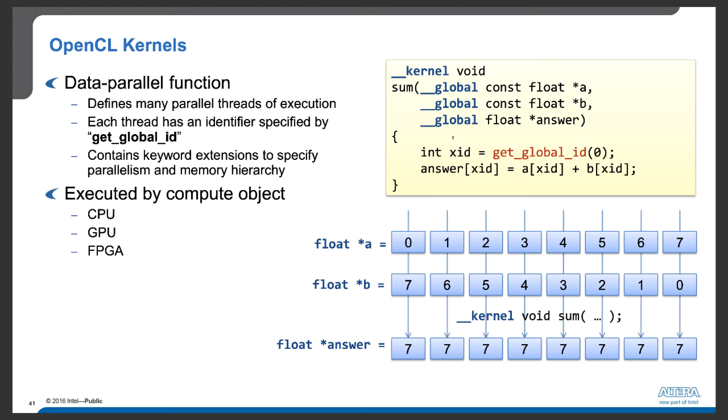OpenCL kernel functions also contain keyword extensions to specify parallelism and memory hierarchy. For example, in this example, __global is a keyword to specify that this variable a, a memory object, resides in global memory.